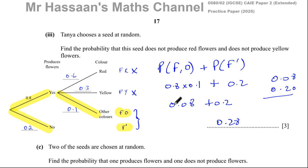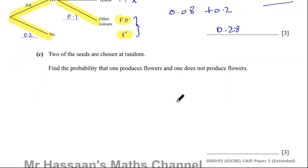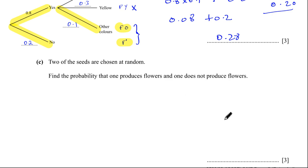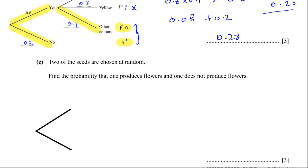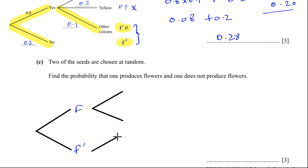Part C says: two of the seeds are chosen at random. Find the probability that one produces flowers and one does not produce flowers. We have the options — either it produces flowers or it doesn't produce flowers — that's for one seed. We're not concerned about colors, just whether they produce flowers or not. So either it produces flowers — I'll call that F — or it does not produce flowers — I'll call that F dash. That's for the first seed, and the second seed could have the same possibilities.